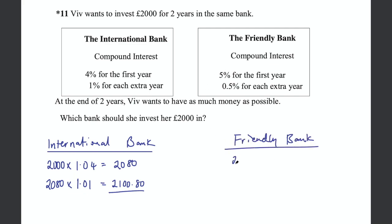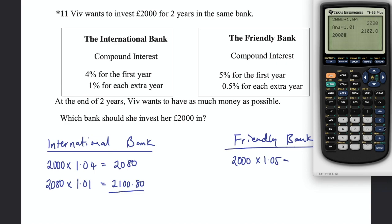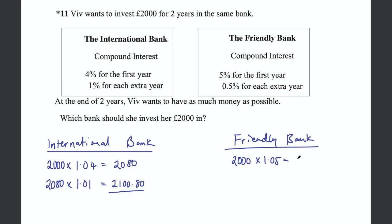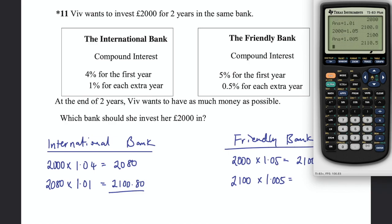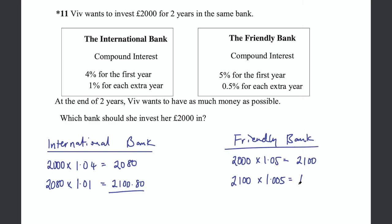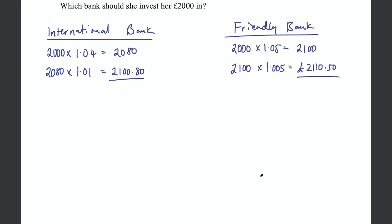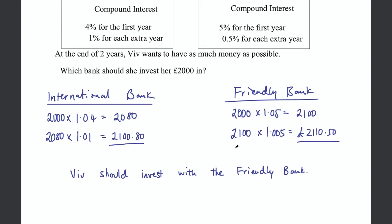For the Friendly Bank: 2000 × 1.05 = £2,100 after year one, then 2100 × 1.005 = £2,110.50 after year two. Clearly we're getting more with the Friendly Bank, so Viv should invest with the Friendly Bank. That's an example of using compound interest to compare banks.